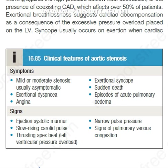Clinical features summary: symptoms range from mild or moderate stenosis — usually asymptomatic — to exertional dyspnea, angina, exertional syncope, sudden death, and episodes of acute pulmonary edema. Signs include ejection systolic murmur, slow-rising carotid pulse, thrusting apex beat indicating left ventricular pressure overload, narrow pulse pressure, and signs of pulmonary venous congestion.